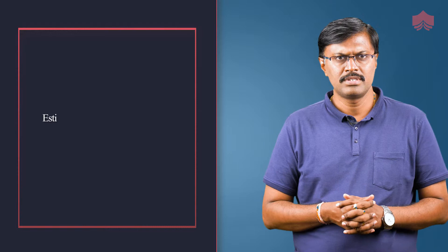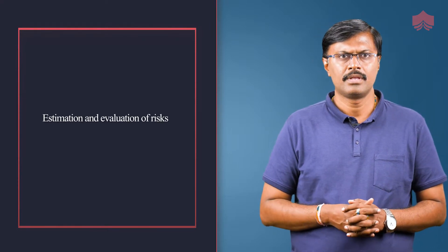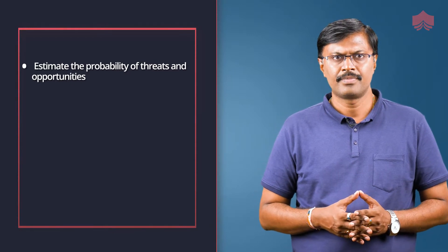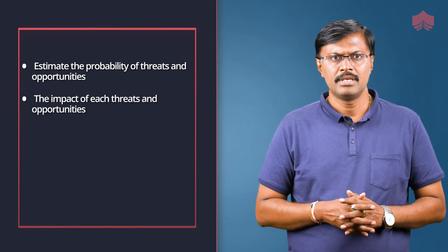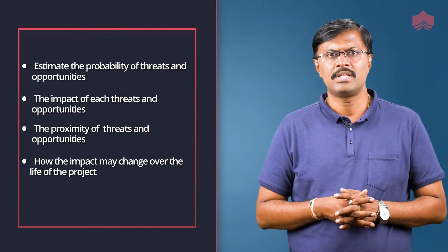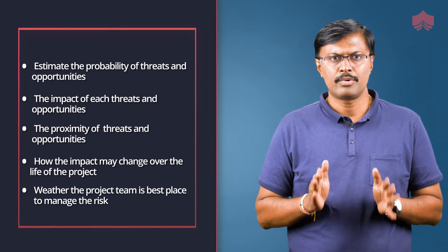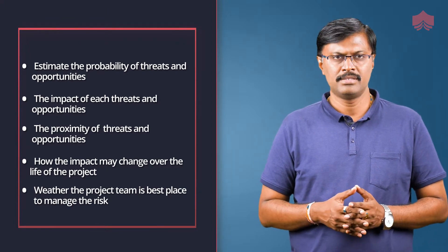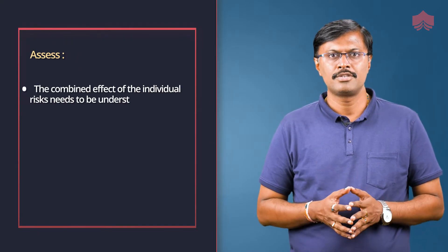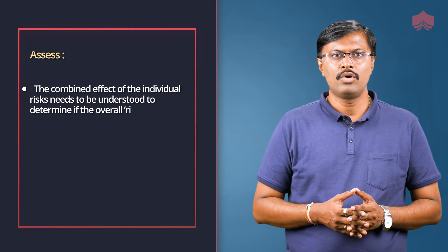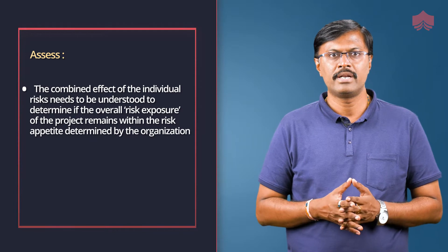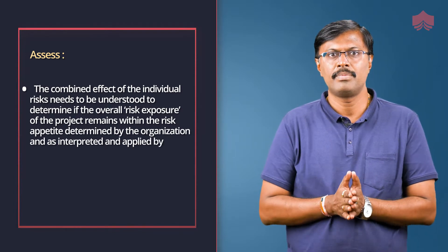The assess step includes estimation and evaluation of risks. Estimation considers: the probability of threats and opportunities, the impact of each threat and opportunity, the proximity of the threats and opportunities, how the impact may change over the life of the project, and whether the project team is best placed to manage the risks. Evaluation refers to understanding the combined effect of individual risks to determine if the overall risk exposure of the project remains within the risk appetite determined by the organization and as interpreted and applied by the project board.